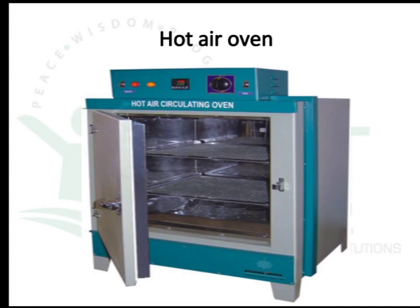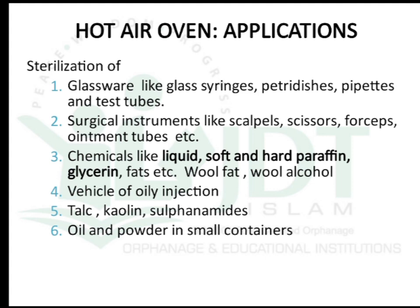The hot air oven is mainly used to sterilize glassware such as glass syringes, petri dishes, pipettes, and test tubes; surgical instruments like scalpels, scissors, and forceps; chemicals like liquid and soft/hard paraffins, glycerin, fat, wool fat, and wool alcohol; vehicles for oily injections; and chemicals like talc, kaolin, and dextrosulfonamide, as well as oils and powders packed in small containers.